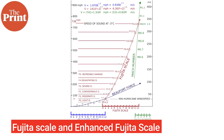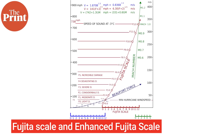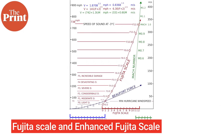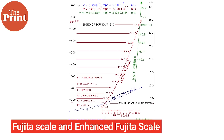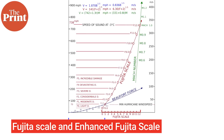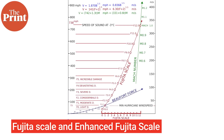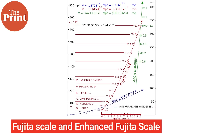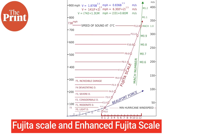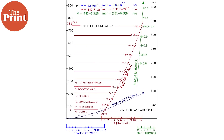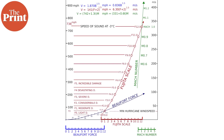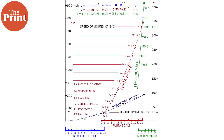Tornadoes are ranked by intensity on something called the Fujita scale, and later the Enhanced Fujita scale, which is based on wind speed. The scale goes from F0 to F5 and classifies tornadoes into weak, strong, violent, significant, and intense.